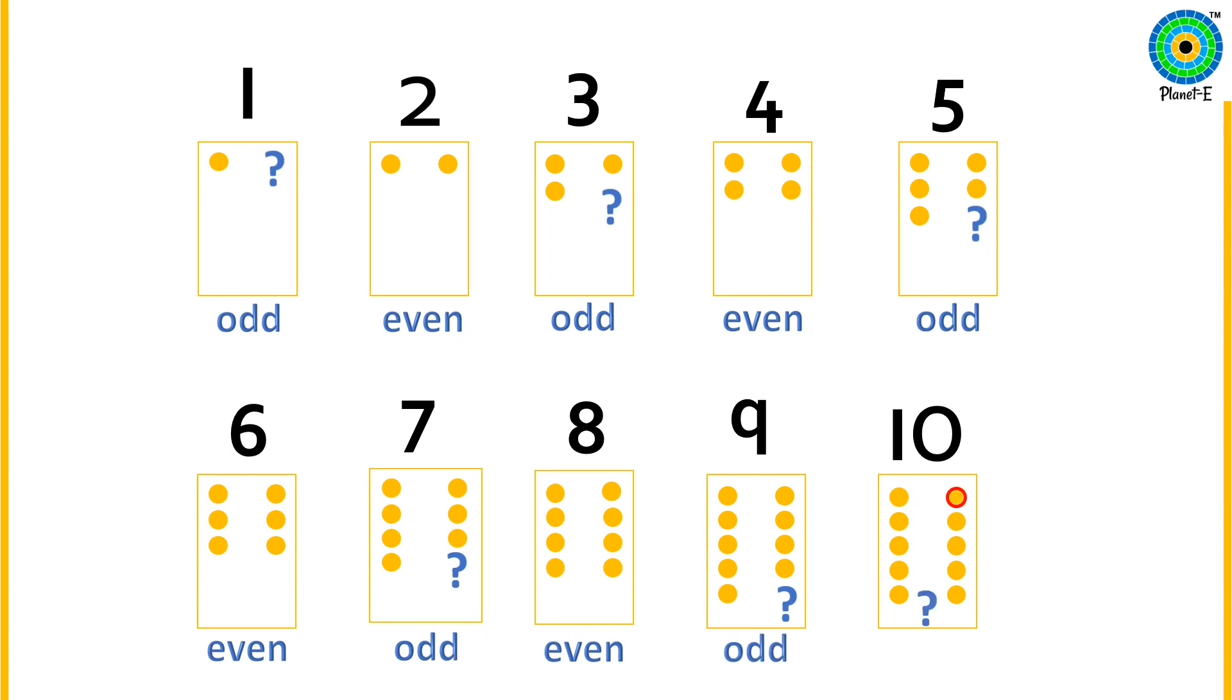Ten. Every dot must have a friend to be even. Let's check if each dot has a friend. Ten is an even number.